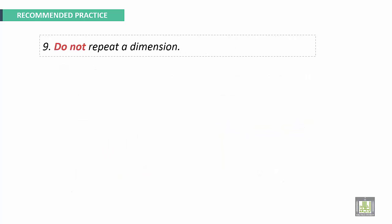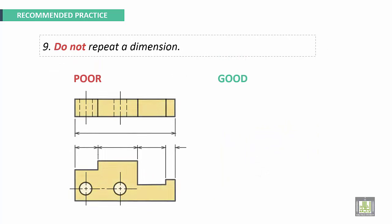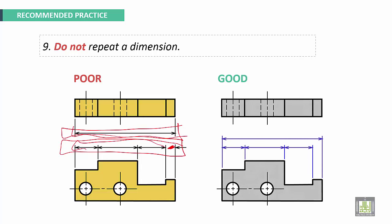Next recommendation: do not repeat a dimension. Here we have an example. One of these dimensions is repeated, because for example this dimension can be deduced from these three and this one. This is a good representation. This dimension will be deduced by calculation from this dimension minus these dimensions.